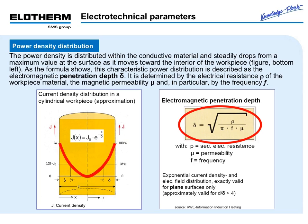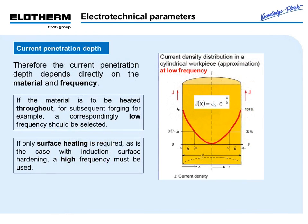In the figure at bottom left, the power density distribution of a metal cylinder is shown. Therefore, the current penetration depth depends directly on the material and frequency.